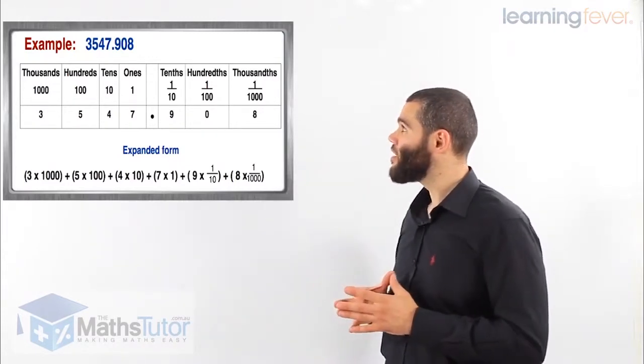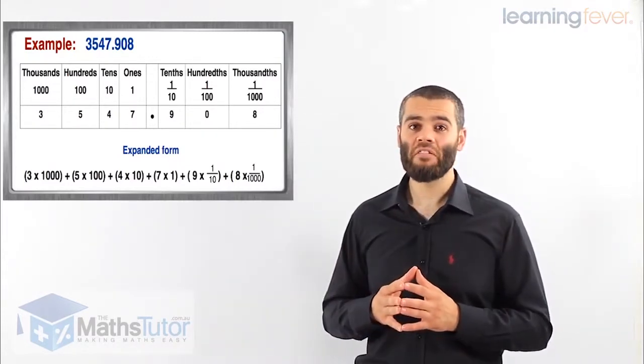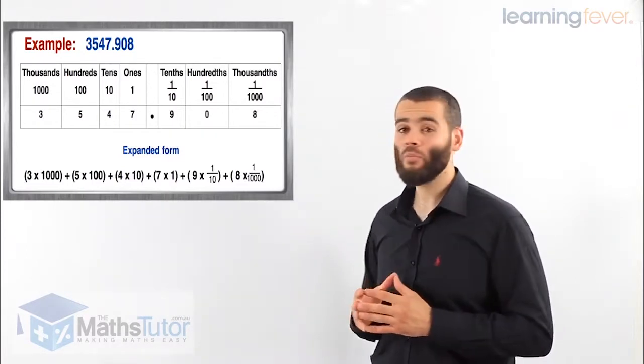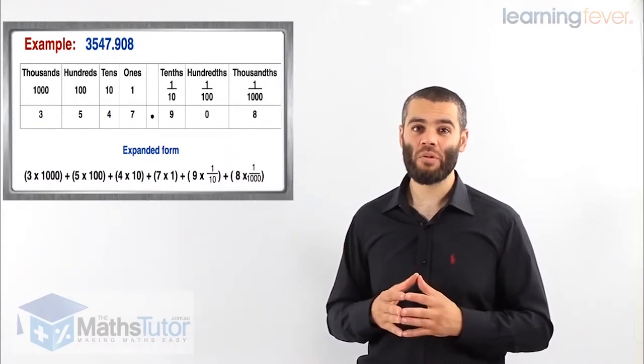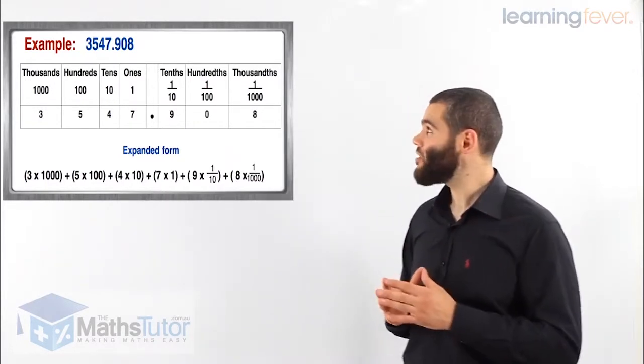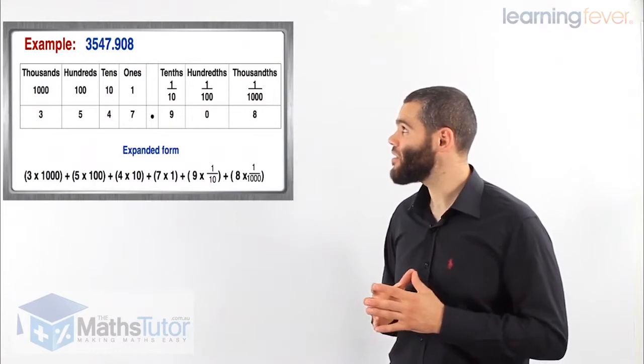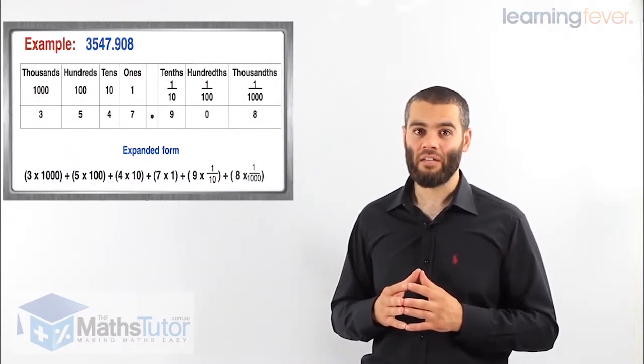And then we have the thousandth column. In this example, our 8 is in the thousandth column, which means 8 out of 1000. Very small number indeed. So 3547.908.